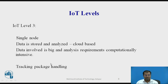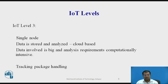The example for IoT level 3 is tracking package handling. This system monitors the vibrations of the object. If the vibration level increases with respect to a fixed threshold, then the appropriate action will be taken. It sends the data to the cloud so that further action will be taken, and there will be an alert message indicating that the vibration count is high.